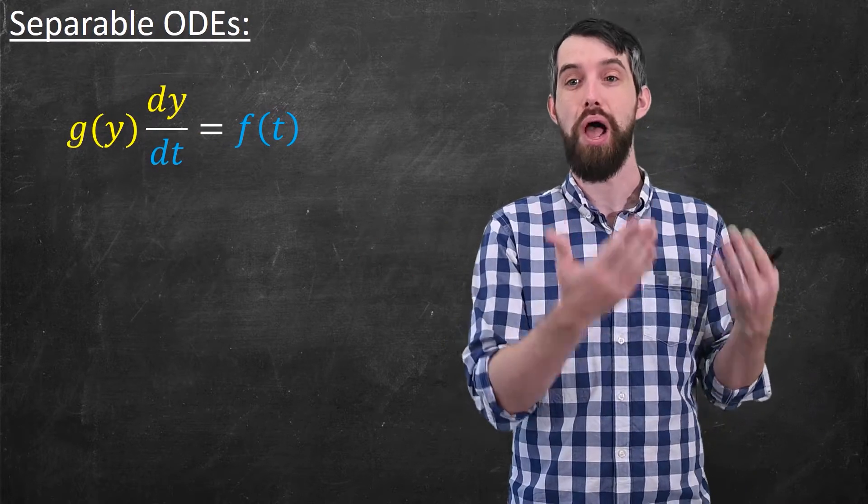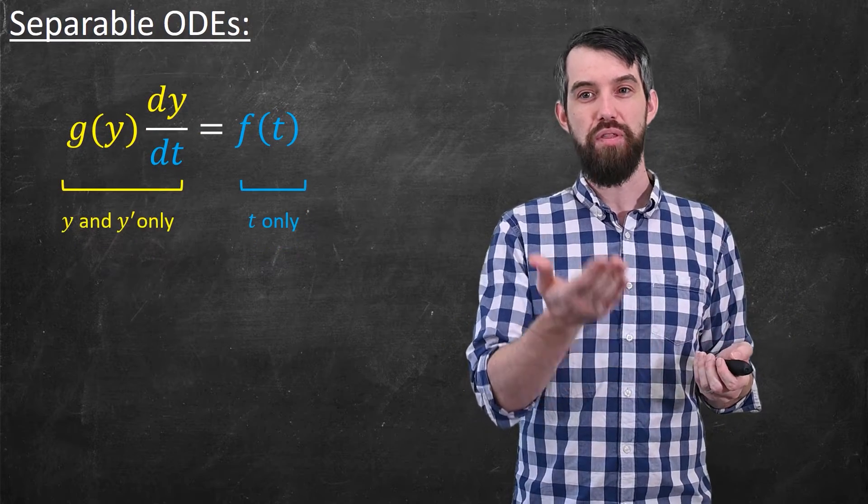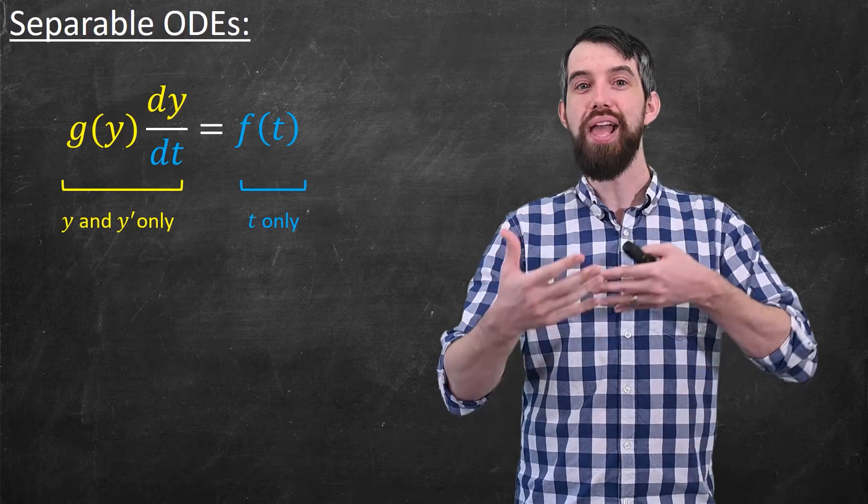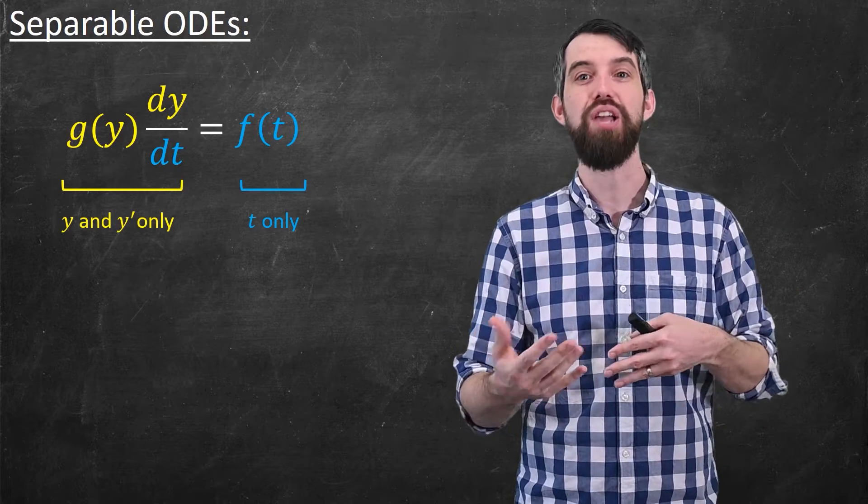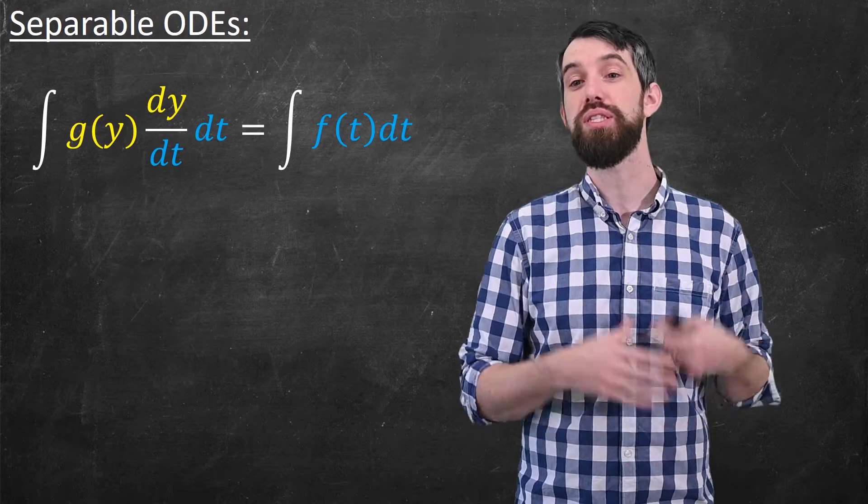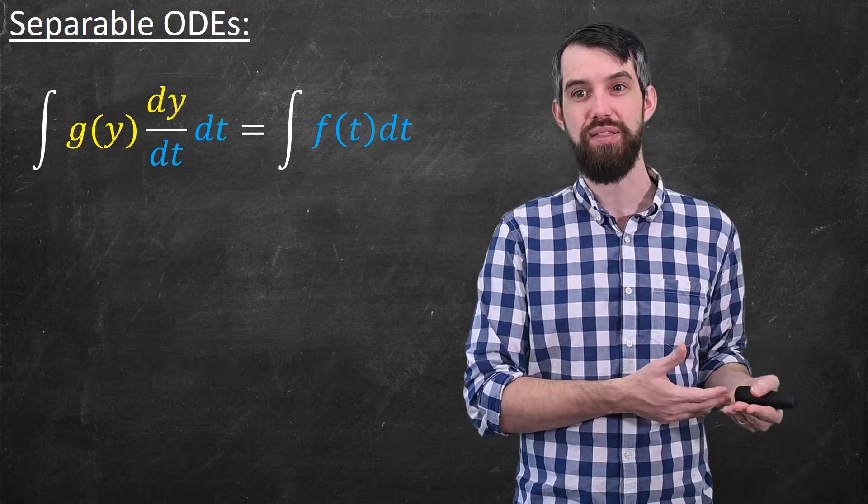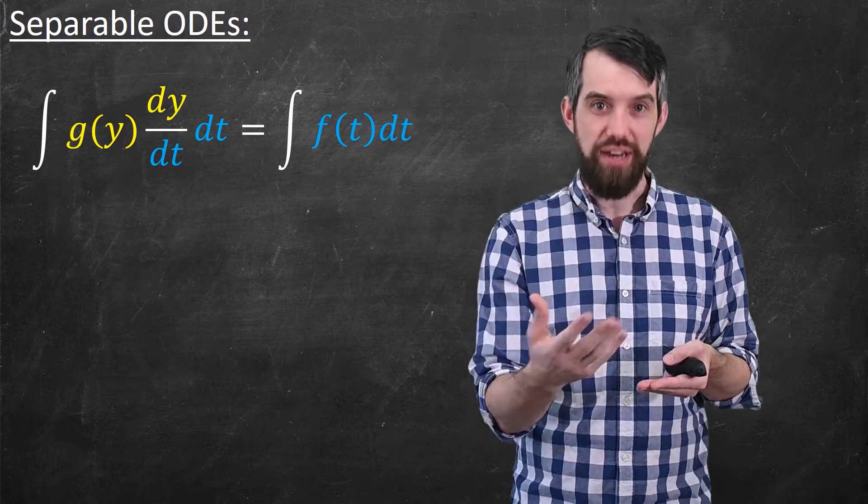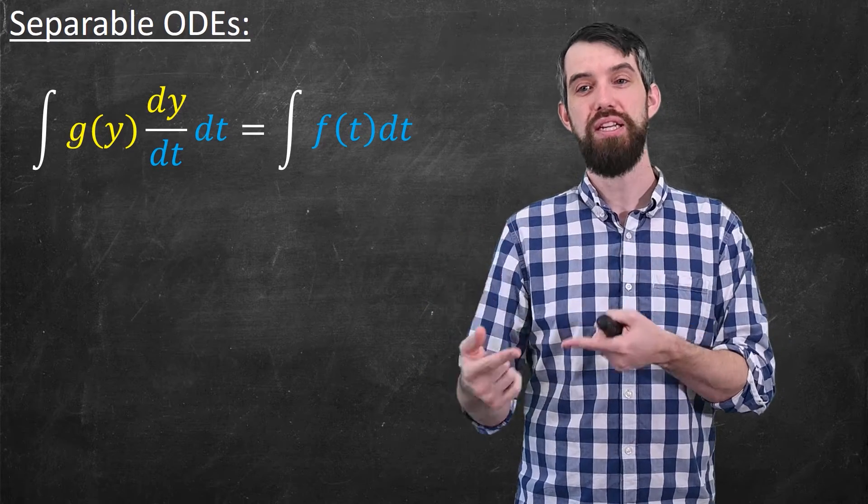So the first thing I can do is I can move the g of y over. That means that on the left I only have y and y prime appearing, and on the right I only have t appearing. Then I could integrate both sides of this with respect to t, and this is going to be the integral of g of y dy/dt dt is equal to the integral of f of t dt.